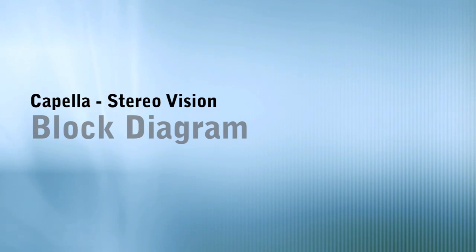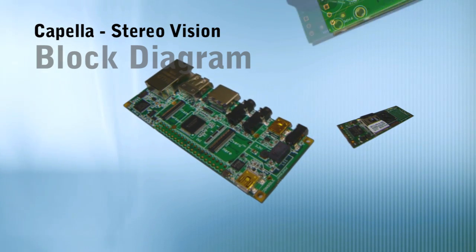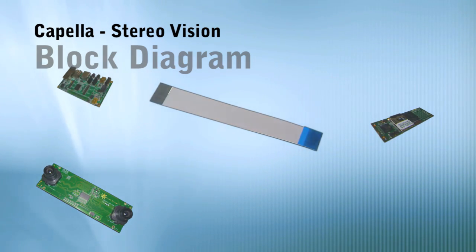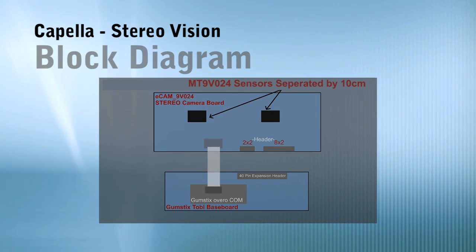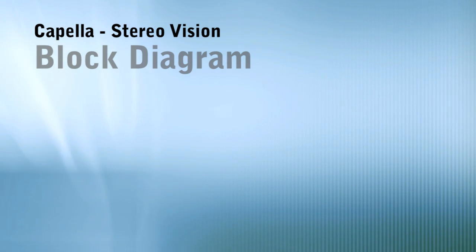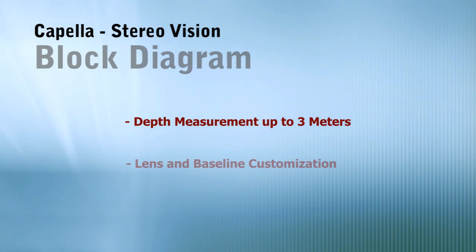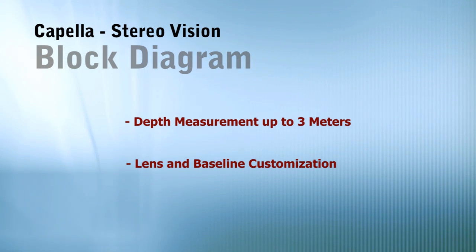What's inside Capella? The Capella stereo vision consists of the Gumstix Overo Storm COM, the Tobi baseboard, and the eCam 9V024 stereo camera board. The eCam 9V024 stereo contains two Aptina MT9V024 sensors separated by 10 cm. These sensors have pre-calibrated M12 lenses mounted on them. With this baseline and lens, depth measurements up to 3 meters are possible, and customers with greater depth measurement requirements can request Econ for lens and baseline customization.